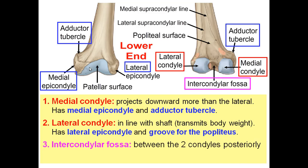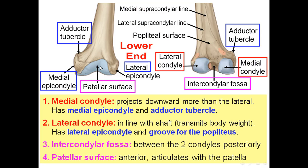The two condyles are fused anteriorly and carry the patellar surface for articulation with the patella. Each condyle has an epicondyle; the medial condyle has the adductor tubercle and the lateral condyle has a groove for popliteus. The two condyles are separated posteriorly by the intercondylar fossa and continuous anteriorly, carrying the patellar surface.